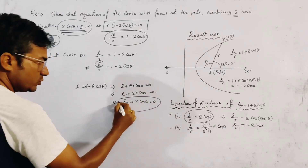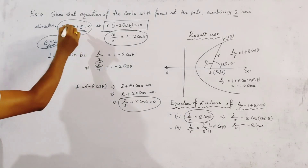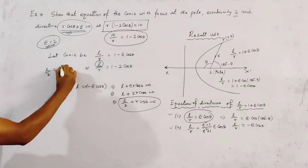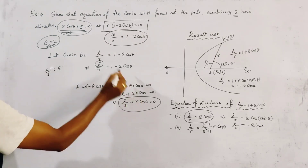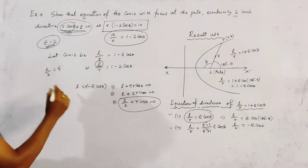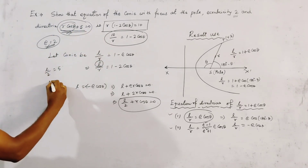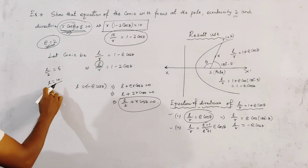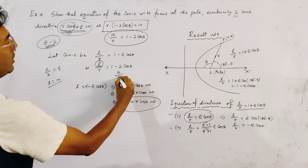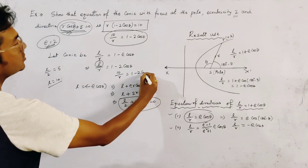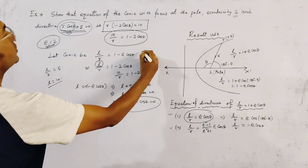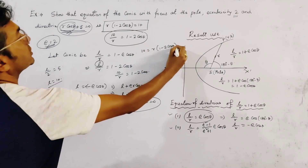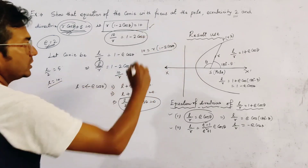Comparing this equation of the directrix with the given directrix equation, and since the r·cosθ terms match, we get l/2 = 5, therefore l = 10. Putting l = 10 into l/r = 1 - 2·cosθ, we get 10/r = 1 - 2·cosθ, so the equation is 10 = r(1 - 2·cosθ). This is our required result.